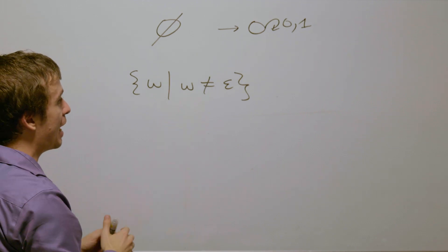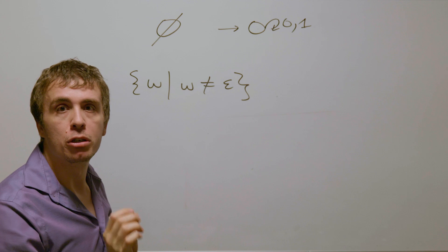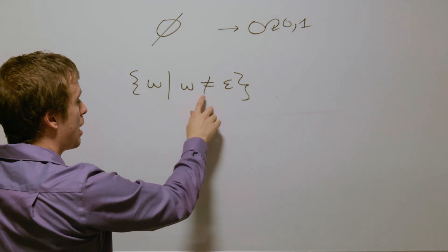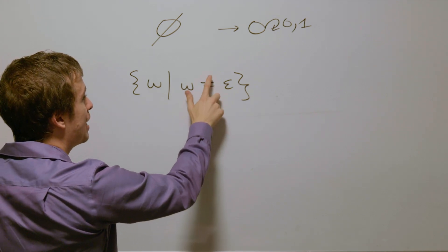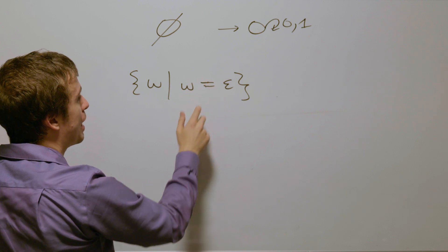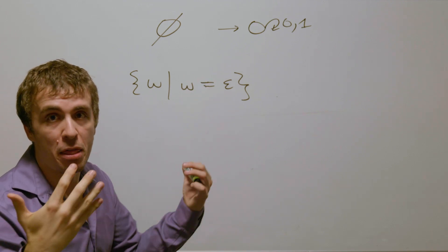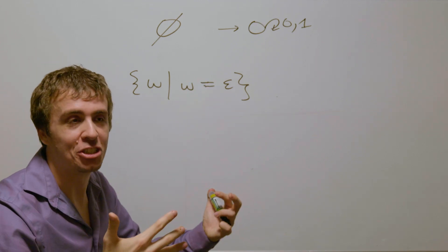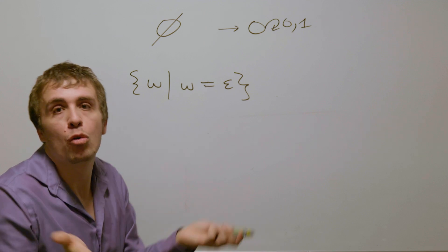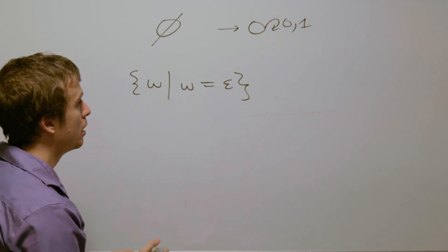For the second language, we can actually use closure under complement to save us a little bit. So if we make a DFA for all strings that are the empty string — namely just the empty string — and then flip final and non-final states, we can make things a lot easier.